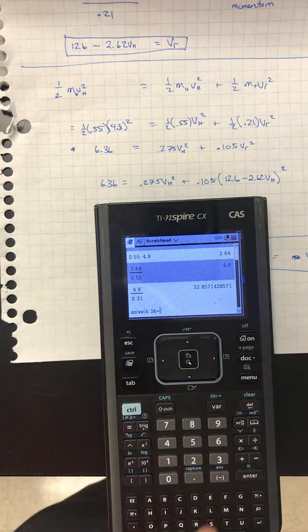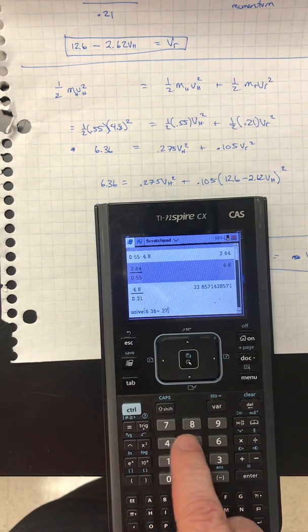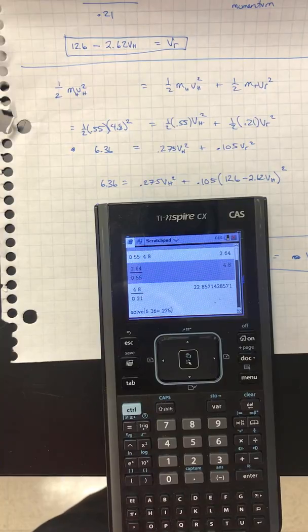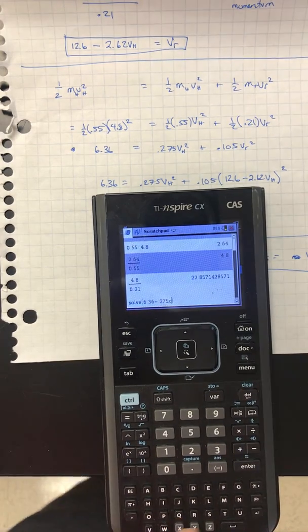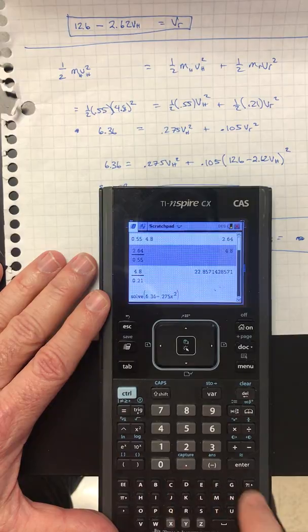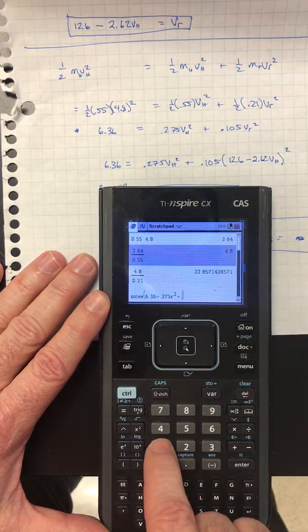I'm typing the equation as it stands: equals .275. I have VH there because it represents velocity, but I'm just going to say X to make it easier. So X squared plus .105.